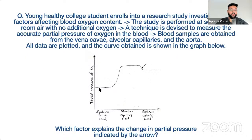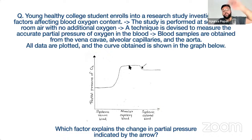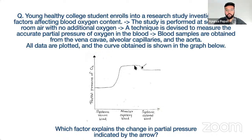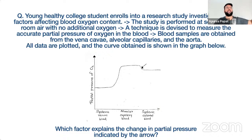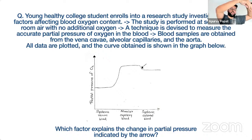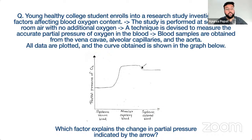Venous blood gets oxygenated to PO2 of 104 at the lungs, but after returning to the heart, saturation drops. This is due to the anatomical shunt: bronchial vein blood and Thebesian veins of the heart empty deoxygenated blood into the left heart, mixing with oxygenated blood and dropping saturation — this is called anatomical shunting.